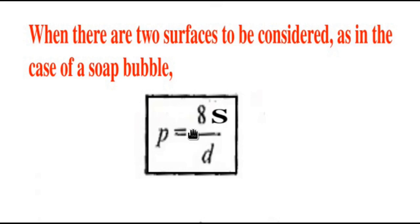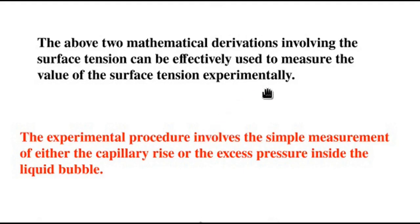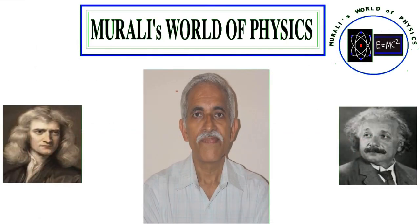The above two mathematical derivations involving the surface tension can be effectively used to measure the value of the surface tension experimentally. The experimental procedure involves the simple measurement of either the capillary rise that means the height above the common liquid level within the tube or in the case of the bubbles, the excess pressure inside the liquid bubble. I will end this video here.